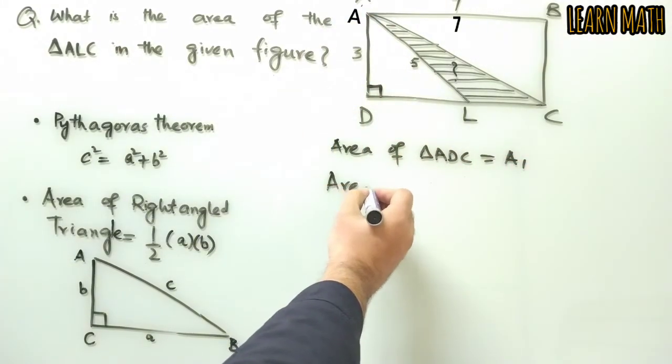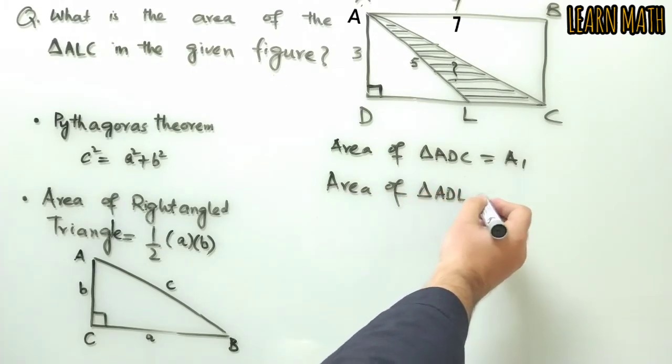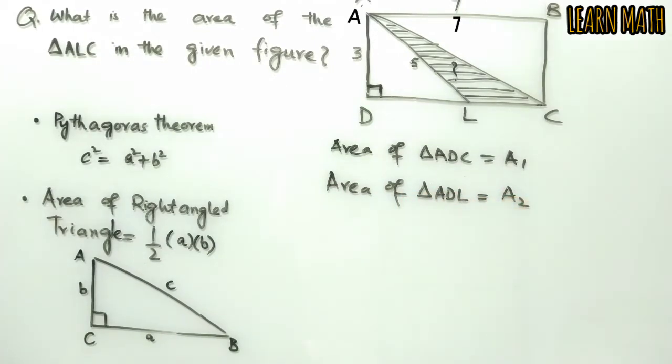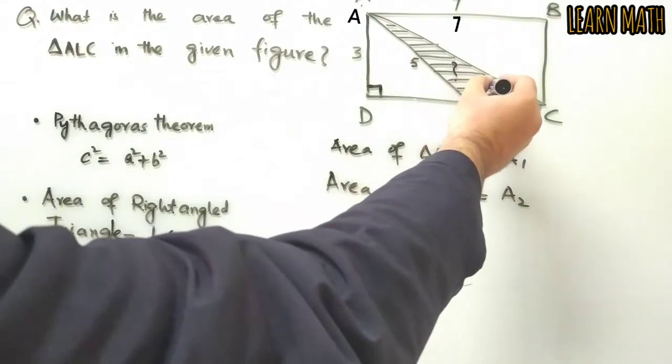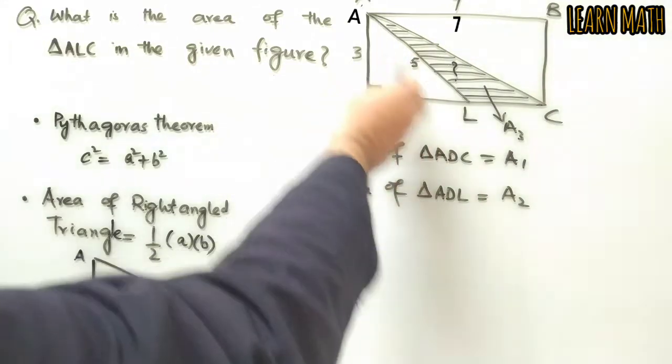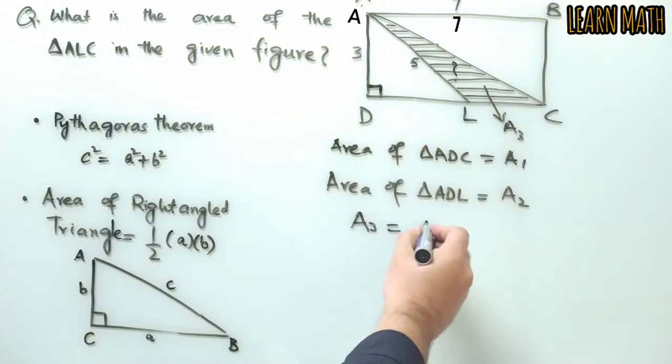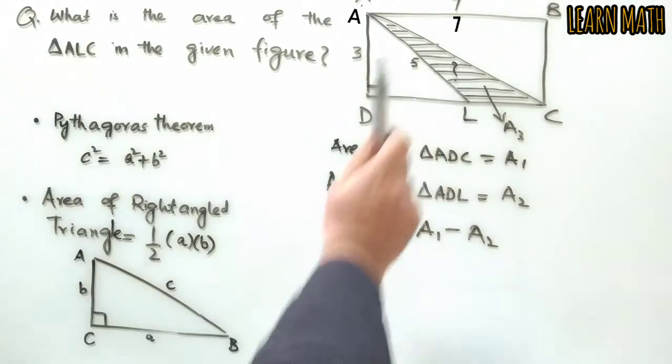Then we will calculate the area of triangle ADL. If this is A₂, we need to find this area, which is A₃. So A₃ will be equal to A₁ minus A₂. First we need to find A₁ and A₂, then we can find A₃.